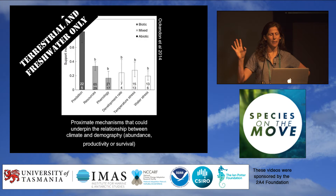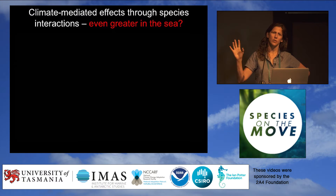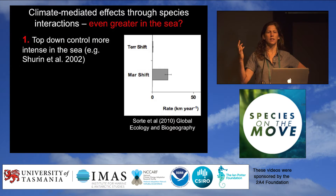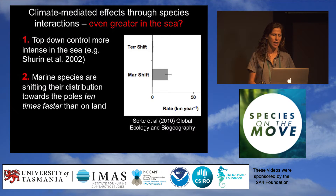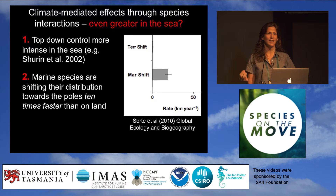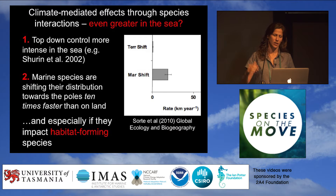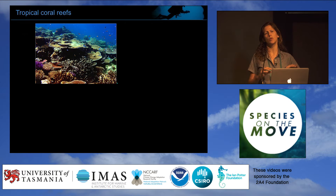However, this study was only based on terrestrial and freshwater species — there were no marine species. The case I will put forward is that climate-mediated effects on species interactions would be even greater if marine systems had been included. This is for a few reasons: top-down control in general is a lot more important in the sea than on land, and marine species are moving a lot faster in the ocean than on land. These climate-mediated impacts on species interactions will be even greater when they impact habitat-forming species.